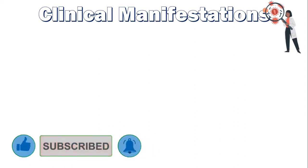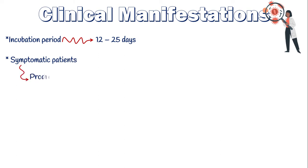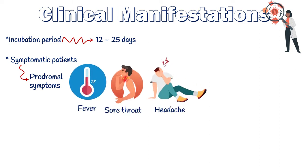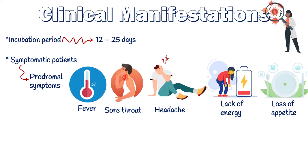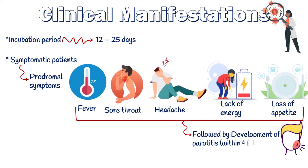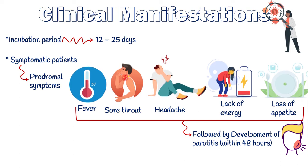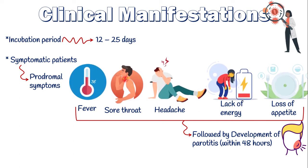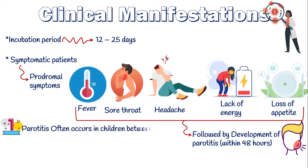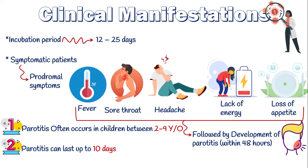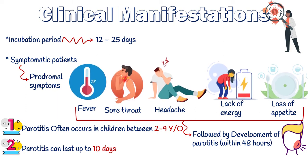The clinical manifestations of mumps play a determining role in proper diagnosis of the disease. Not all patients with mumps have symptoms. Those who do will have symptoms 12–25 days after exposure. Mumps typically begins with a few days of nonspecific, mild symptoms such as fever, sore throat, headache, muscle aches, lack of energy, and loss of appetite. These prodromal symptoms are usually followed by development of parotitis within 48 hours. Mumps is most recognizable by parotitis, which often occurs in children between 2–9 years of age, can last up to 10 days, and occurs in nearly 90% of all symptomatic patients.